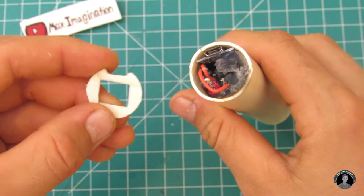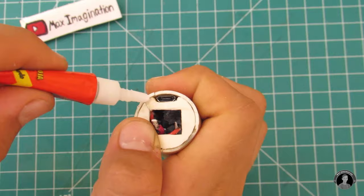To get the back cover on, you may need to unsolder the switch and then solder it back in place once you've glued the cover in.